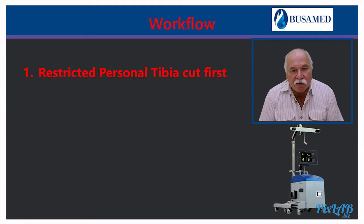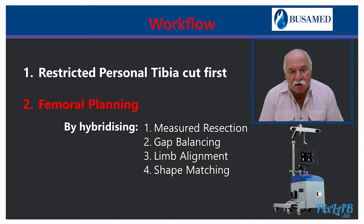The workflow we suggest is best restricted to a personal tibia cut first, followed by femoral planning. The femoral planning is then done by hybridizing four methods: namely, one — measured resection; two — gap balancing; three — limb alignment; and four — shape matching.